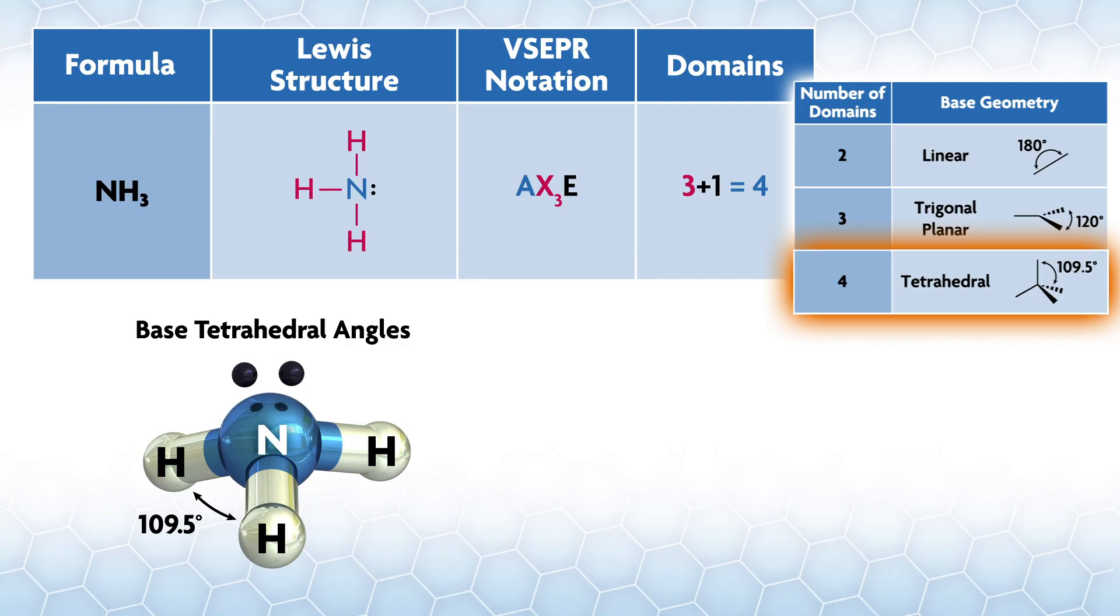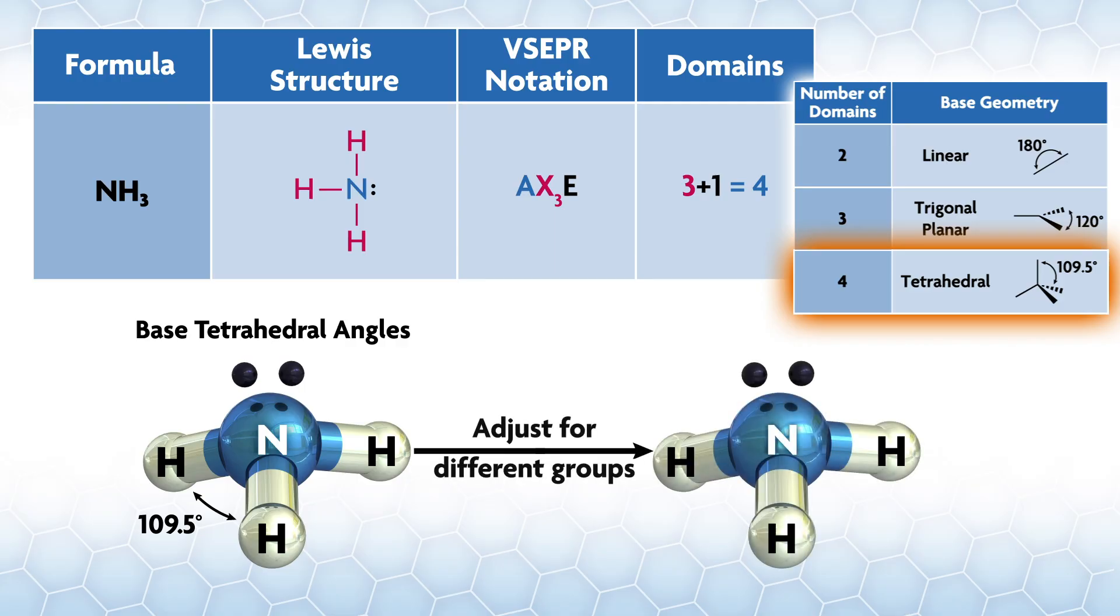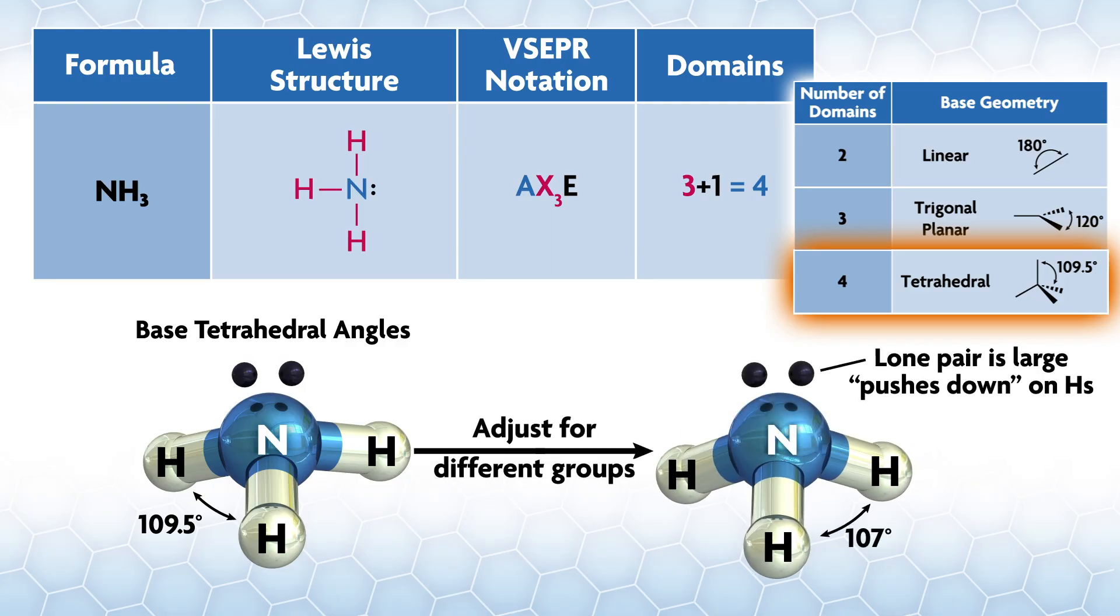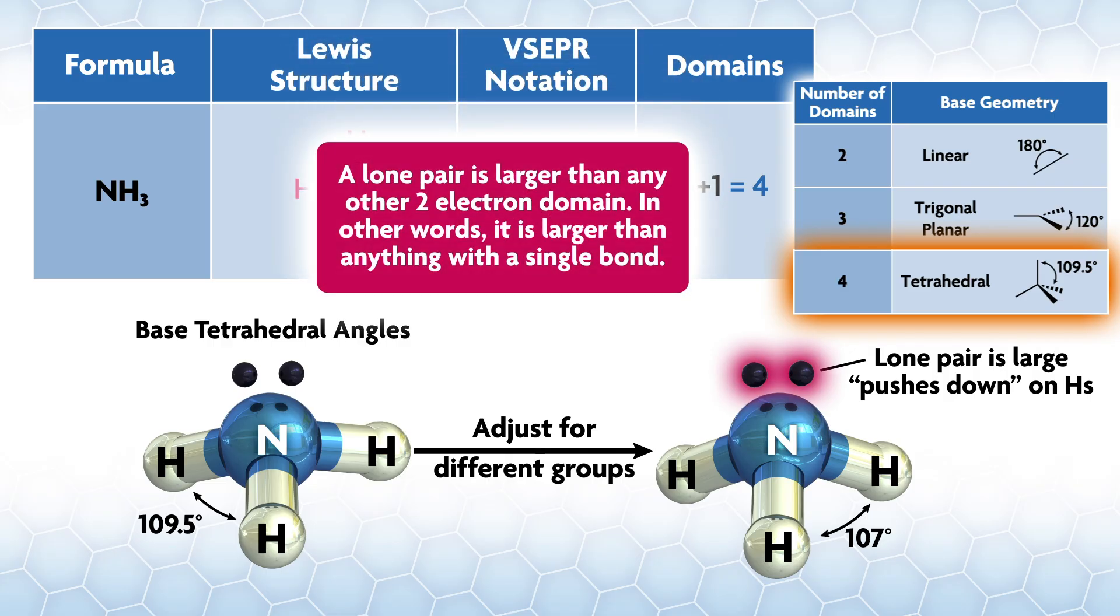It is exactly tetrahedral. If the compound has four different types of domains they can be different sizes leading to some deviation from the pure base geometry. This is the case for both NH3 and BrF5, both of which have one lone pair along with other groups. Let's look at NH3 first.